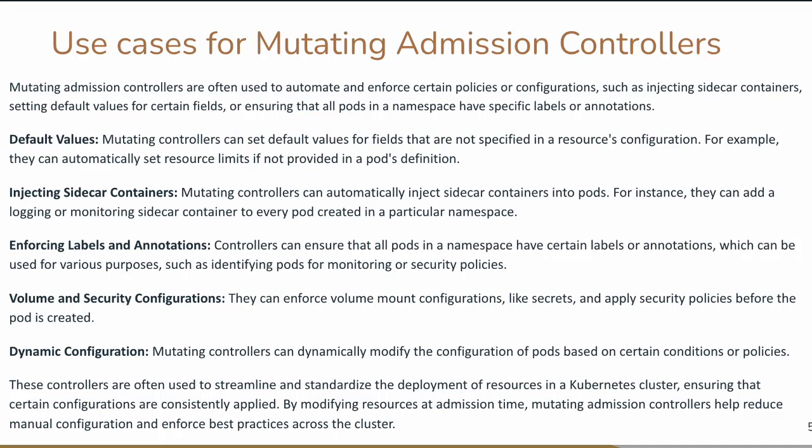This admission controller can use some default values in certain fields to ensure that all your pods in a namespace have specific labels and conditions. Even though you might not be putting those values, this can actually modify the policy to add those labels and annotations, so that a sidecar will automatically be created which can ship the logs from the pod to our centralized Elasticsearch cluster. This reduces your configuration burden — if someone forgot to add it, the mutating admission controller will automatically inject the sidecar.